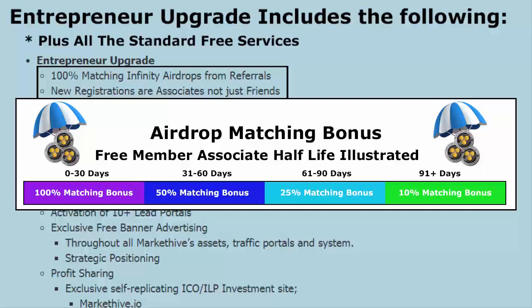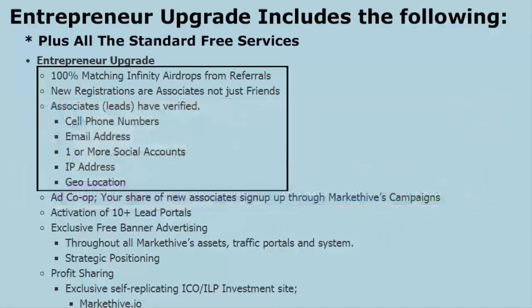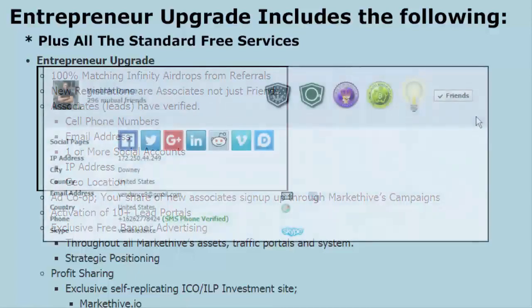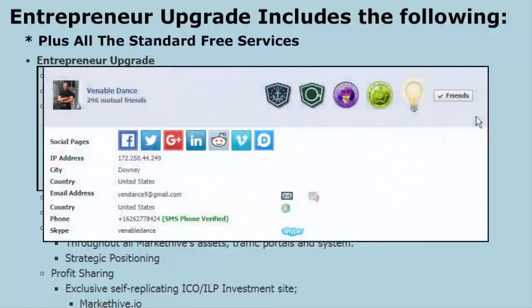We think that's more than fair — we want you to try it out and see that it works. New registrations that are associates, not just friends, have already been identified with verified cell phone numbers, email addresses, one or more social accounts, IP addresses, geolocation, and more.